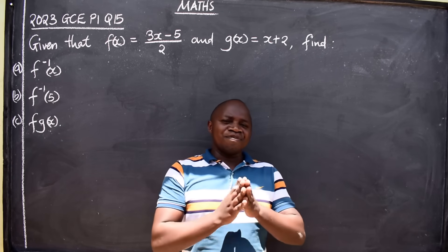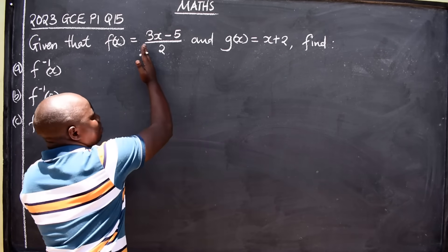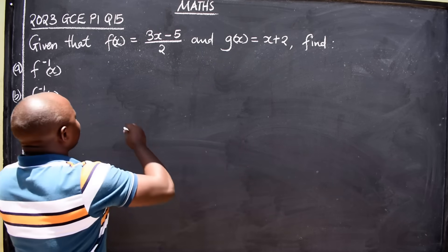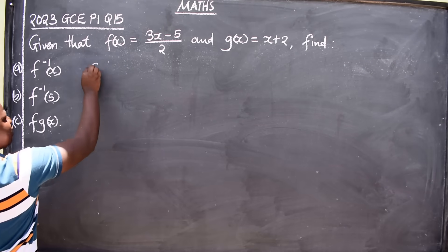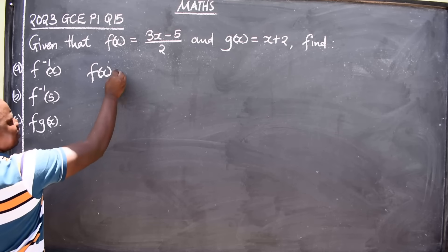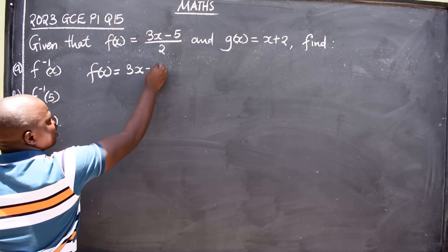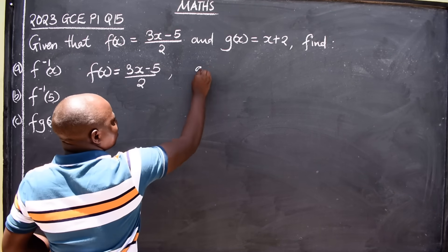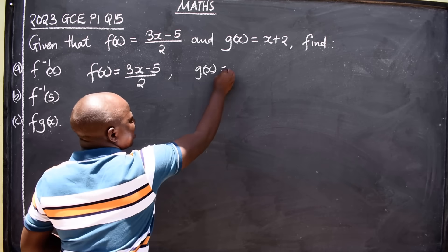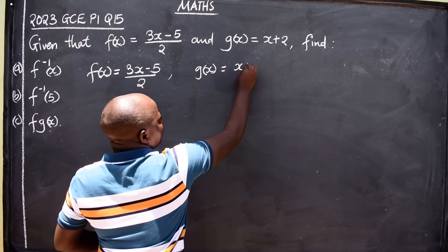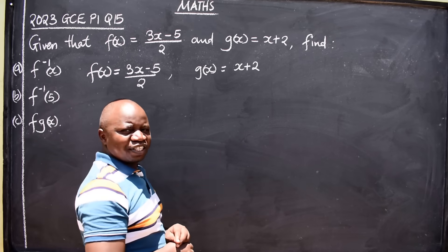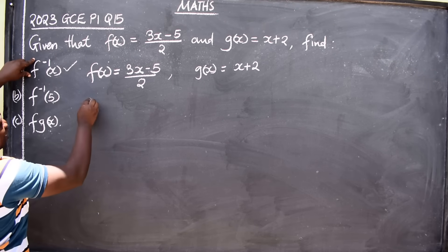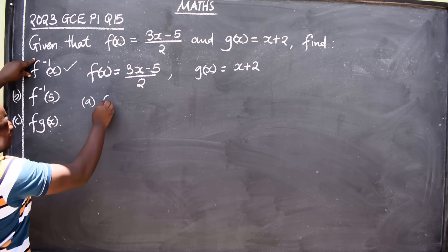We've been given two functions — the question is coming from a topic called functions and relations. When you are given two functions, copy them first. So f(x) = (3x - 5)/2 and g(x) = x + 2. Now we go to the first part of the question, where we are told to find the inverse.